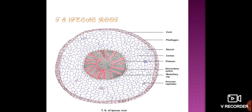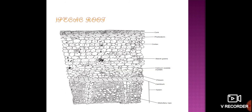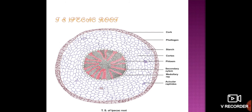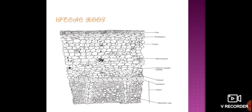This image displays the transverse section of ipecacuanha root. The first outermost layer is the cork, which is circularly present. Inside the cork are 3 to 4 cell layers of phellogen. Below the phellogen is the cortex region.